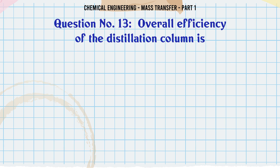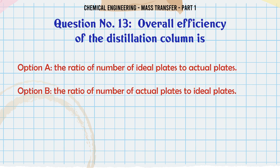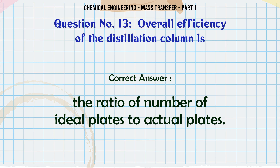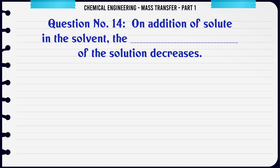Overall efficiency of the distillation column is: A. The ratio of number of ideal plates to actual plates. B. The ratio of number of actual plates to ideal plates. C. Same as the Murphree efficiency. D. Always more than the point efficiency. The correct answer is the ratio of number of ideal plates to actual plates.